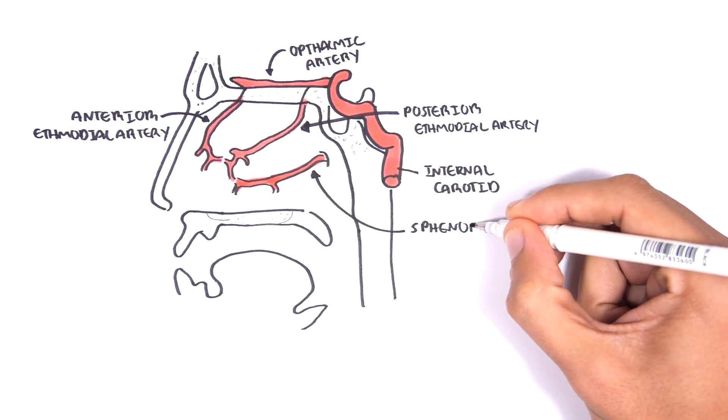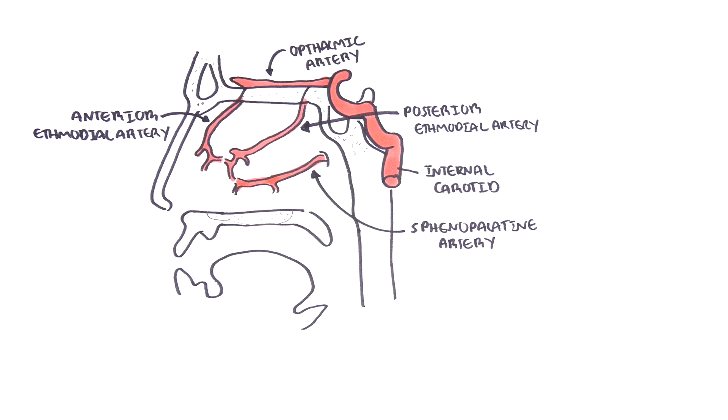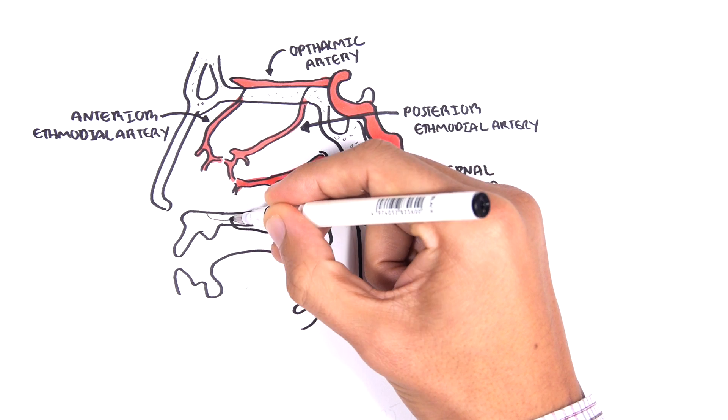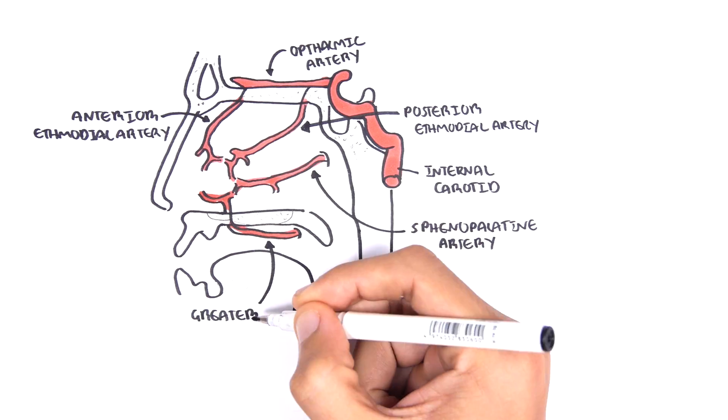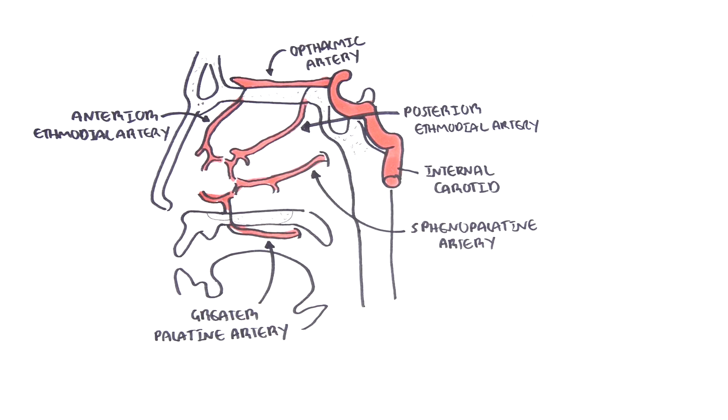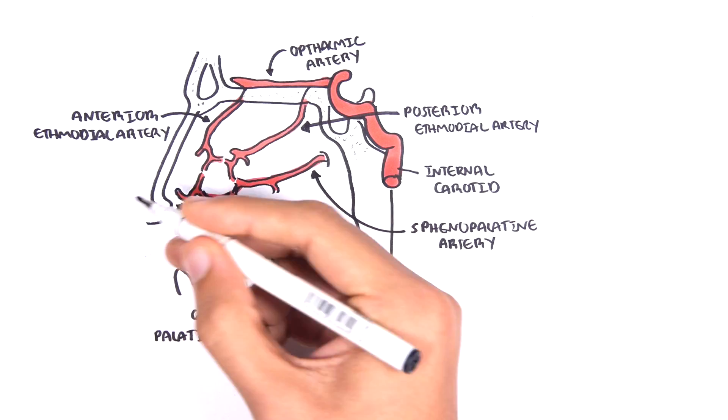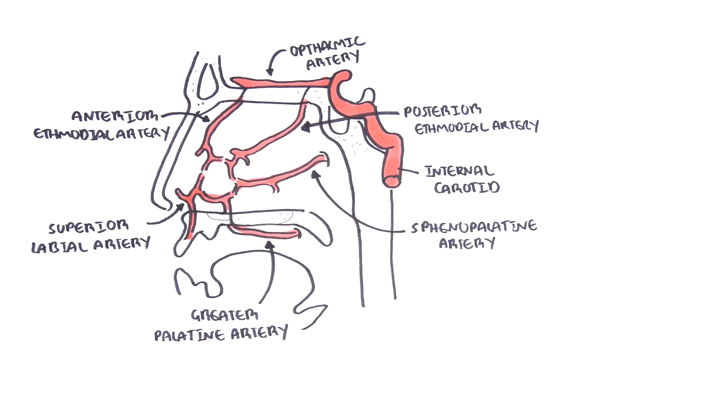The sphenopalatine artery is a branch of the maxillary artery and also connects to this area. The greater palatine artery is also another eventual branch of the maxillary artery. Finally, the superior labial artery is a branch of the facial artery and also converges to this area.